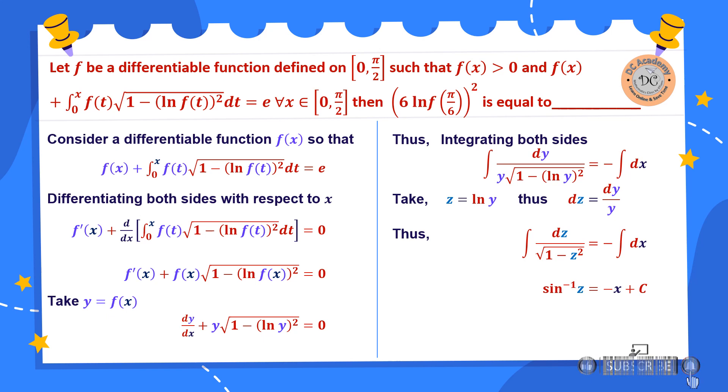And that's equal to -x + c. So therefore we get the solution hence z is equal to, that is ln f(x), which will be equal to sin(-x + c).